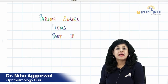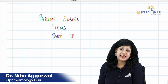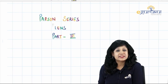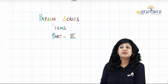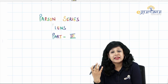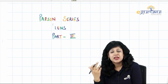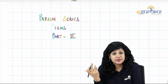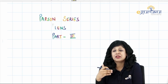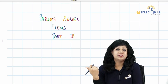Hello guys, welcome to the Parsons series and this is Part 3 of the lens. Last time we studied the different stages of cataract, the different etiopathogenesis, the symptoms, how to differentiate them, and the techniques to highlight these cataracts — whether it is ophthalmoscopy, slit lamp examination, and the grading for the different stages of cataract.